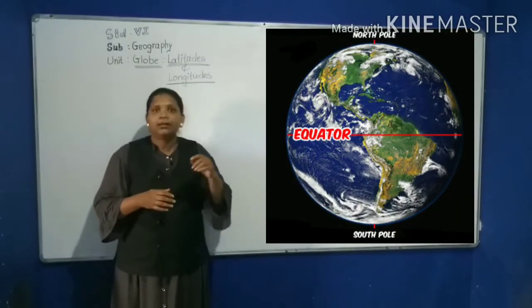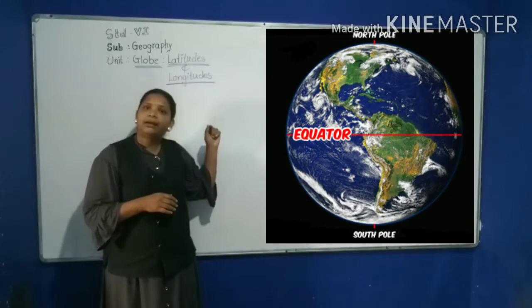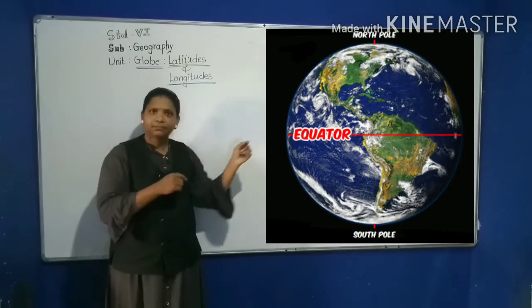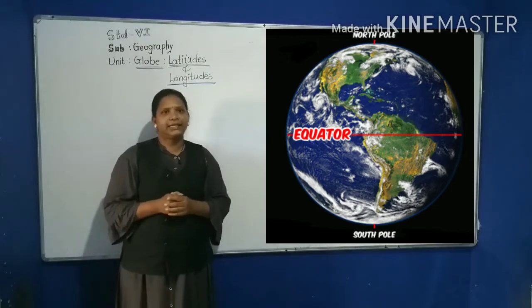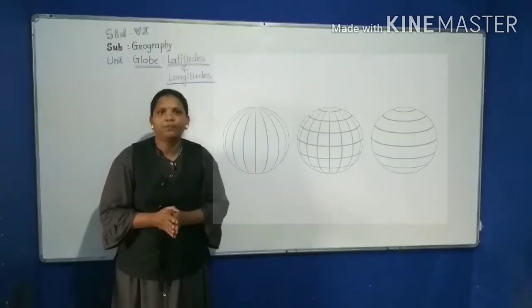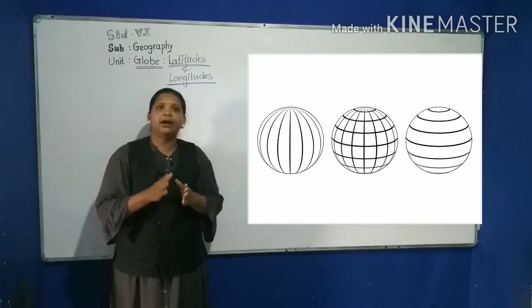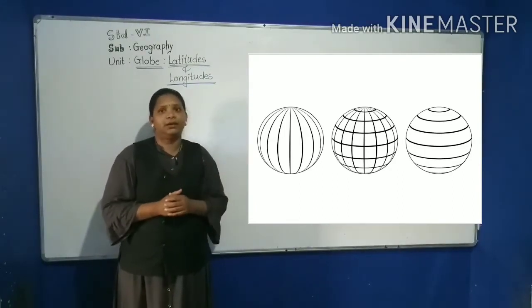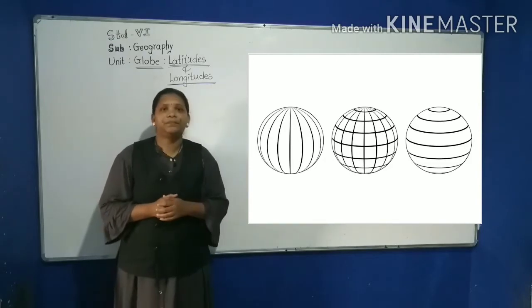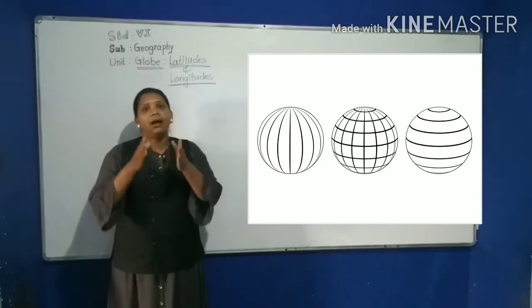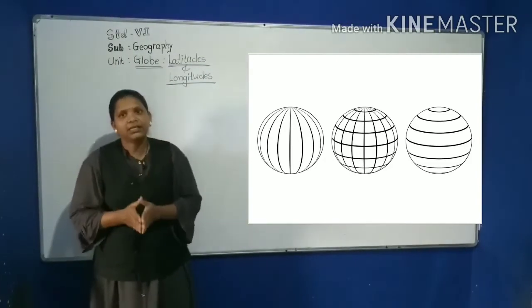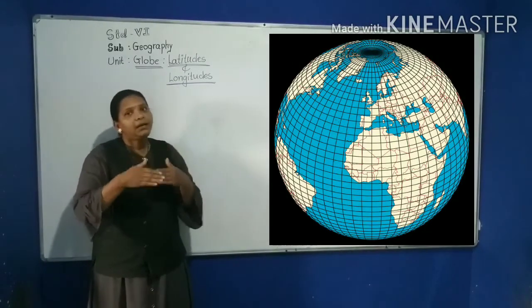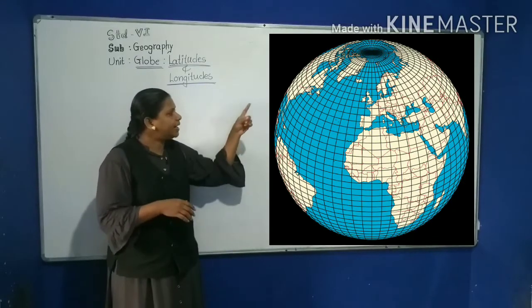The imaginary line that runs midway between the poles from west to east is called the equator. Another imaginary lines are drawn around the globe which make the study of the earth easier.